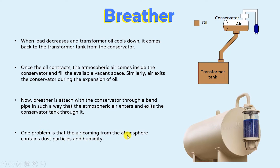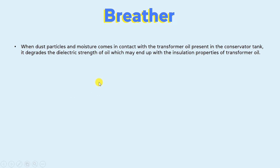One problem is that the air coming from the atmosphere contains dust particles and humidity. When the dust particles and moisture come in contact with the transformer oil present in the conservator tank, it degrades the dielectric strength of oil, which may affect the insulation properties of transformer oil, ultimately affecting the working of the transformer.